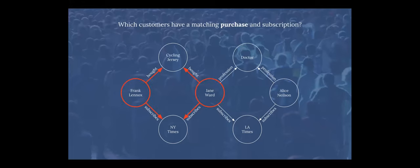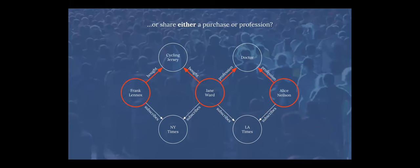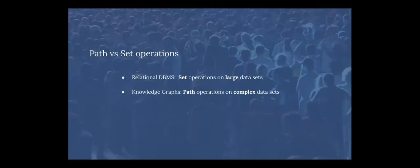These are short-path queries. The longer those paths get, the more important it is to have a suitable model for it. That's really what's so great about graph. Relational databases are great for large set operations — grouping a million rows of data on a particular dimension. But if you want to do path operations to really find connections in a complex data set, you want to use a graph. That applies to catalogs because of all the different things that we need to connect.